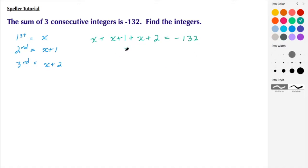Then we're going to simplify. I have three X's, so I have three X. One plus two gives me three, and again it's equal to negative 132. Then I'm going to subtract three from both sides. That cancels, and I have three X is equal to negative 135.